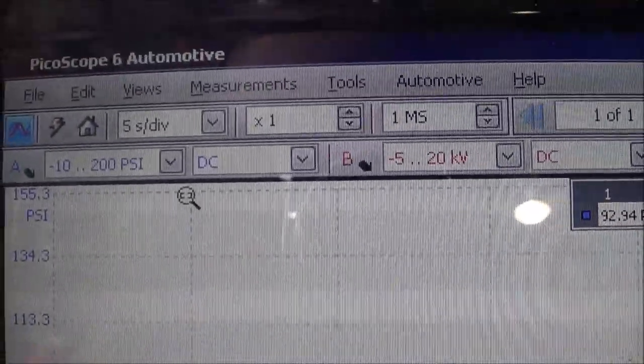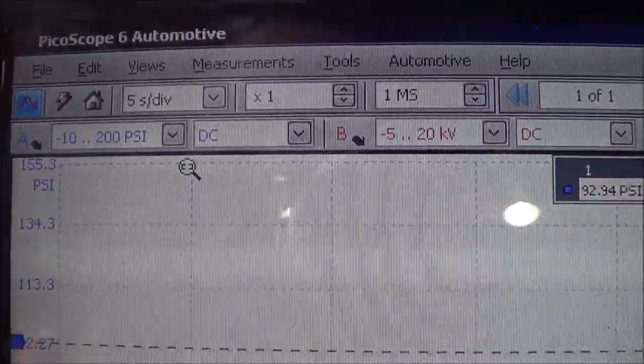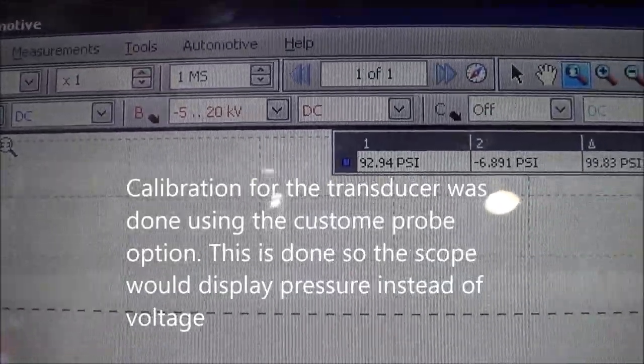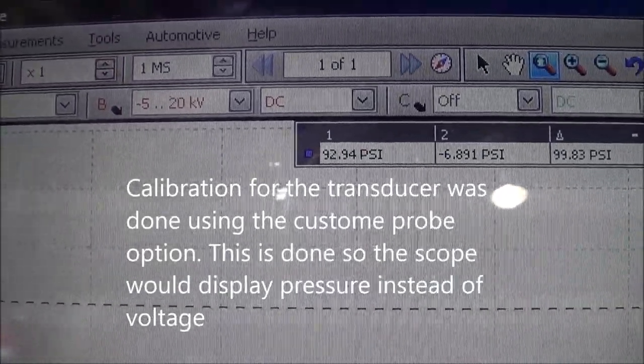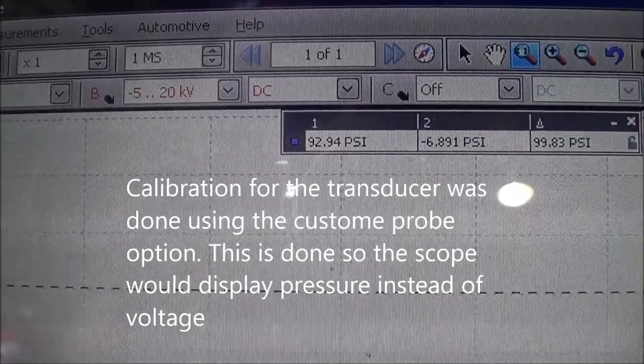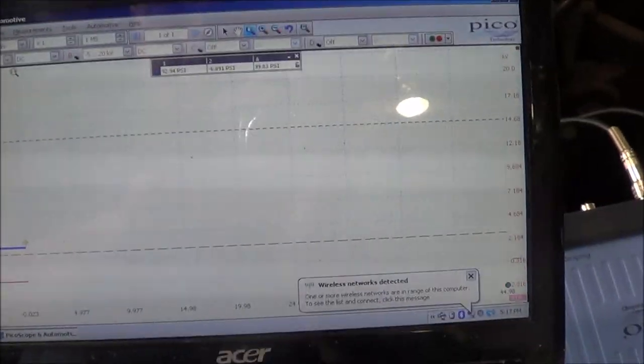Right now it's going to be from minus 10 psi to 200 psi, and channel B is the secondary ignition probe which is set to minus 5 to 20 kV. So I'm gonna run this and have you take a look at the waveform that I get from this.